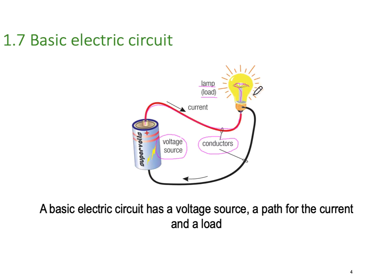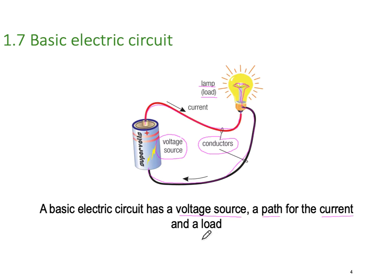Current flows through the element, back down the conductor, and back to the negative side. A basic electric circuit has four components: voltage source, path, current, and load.